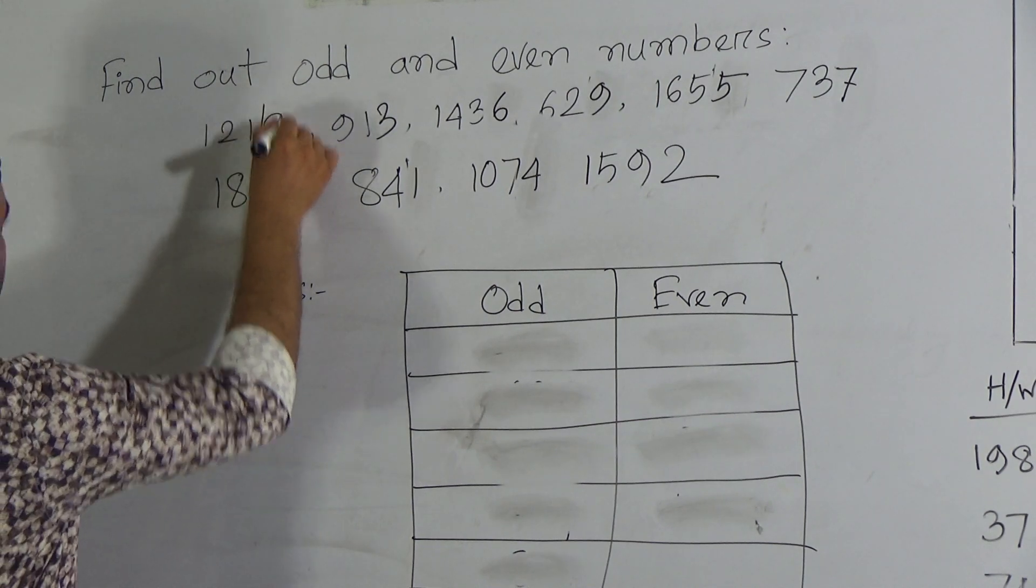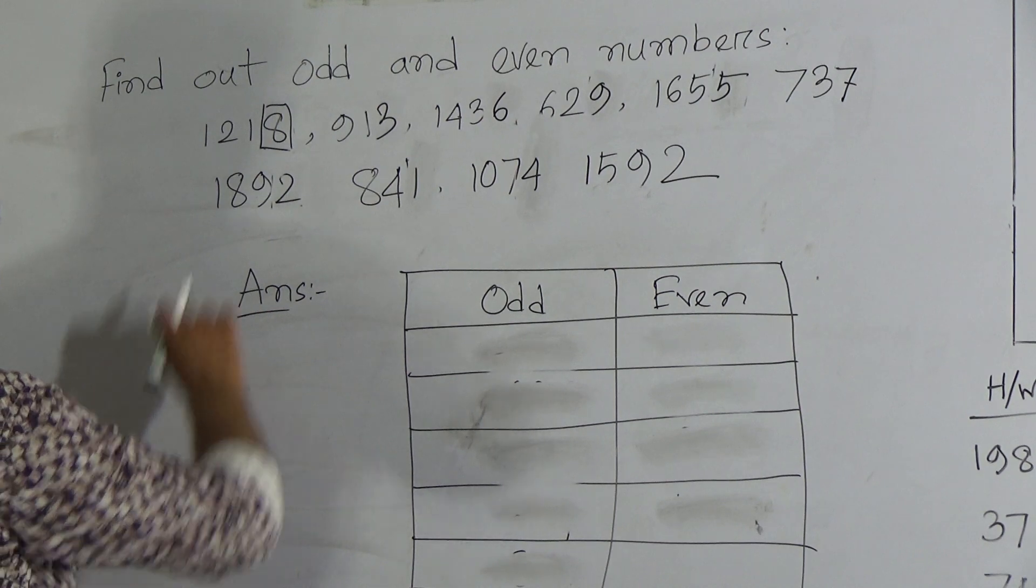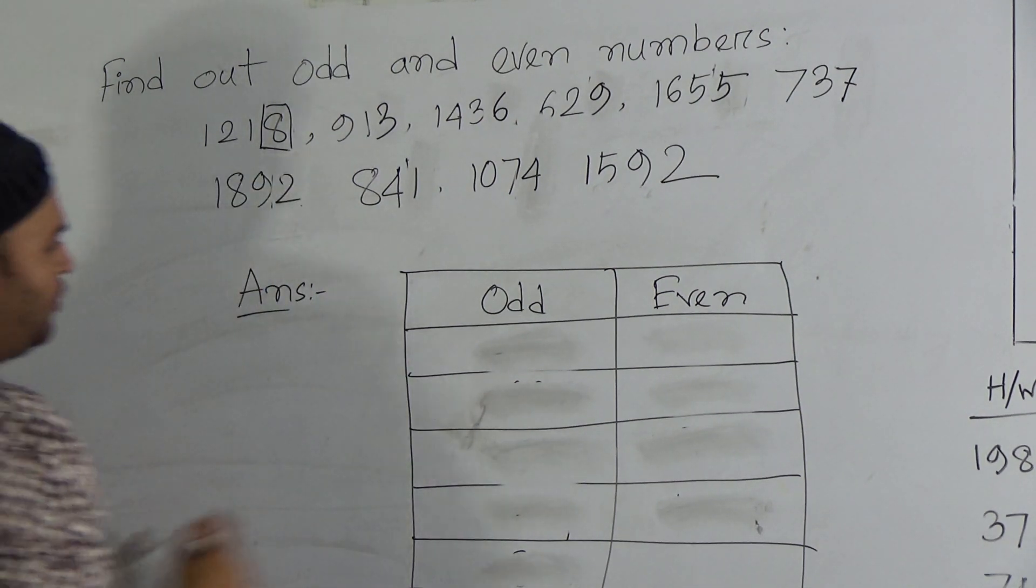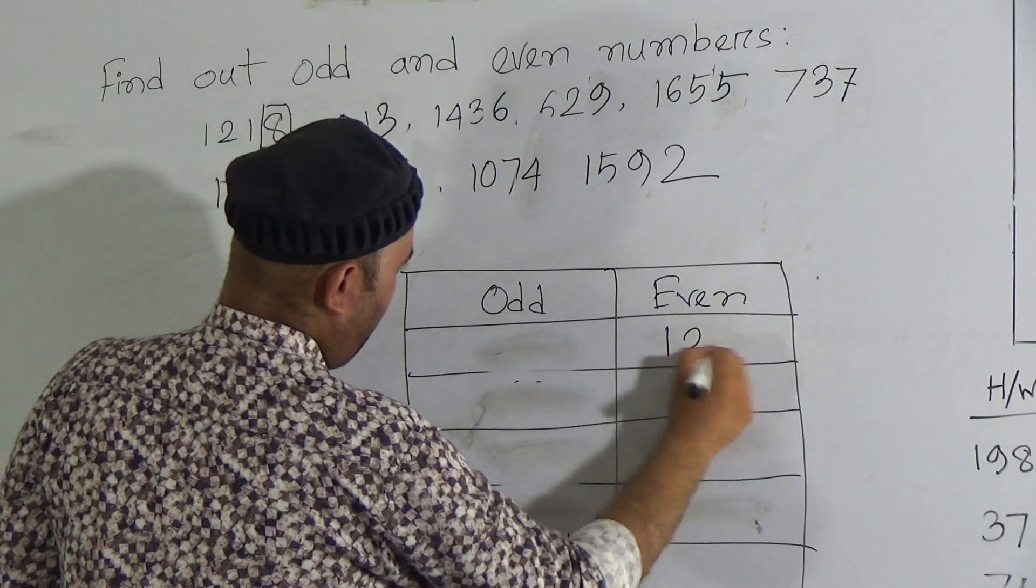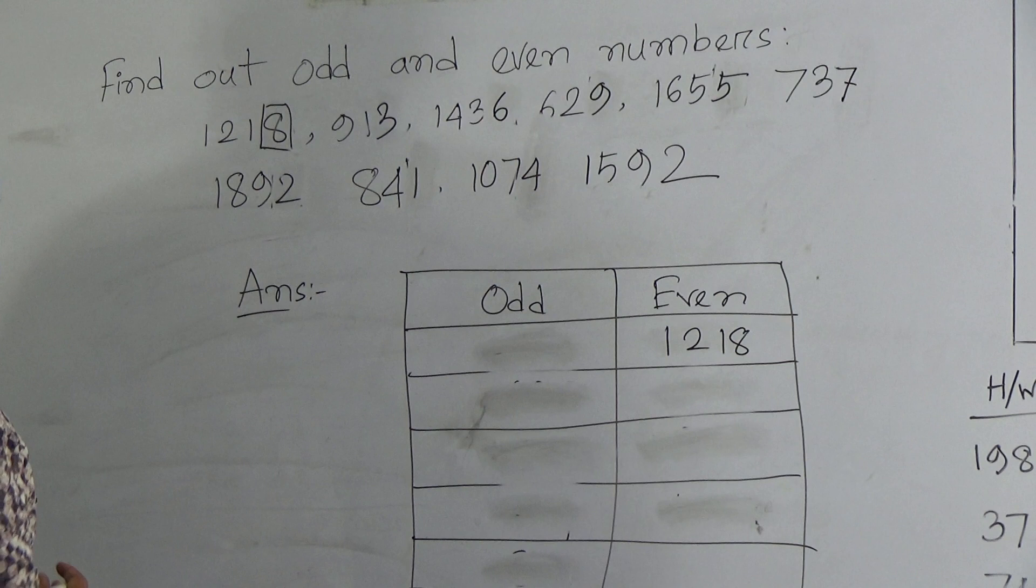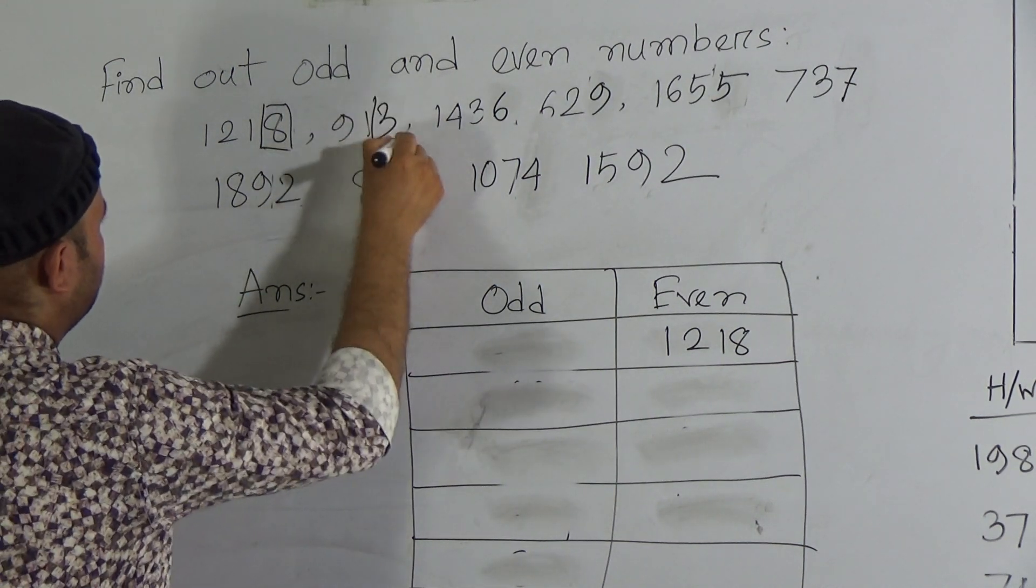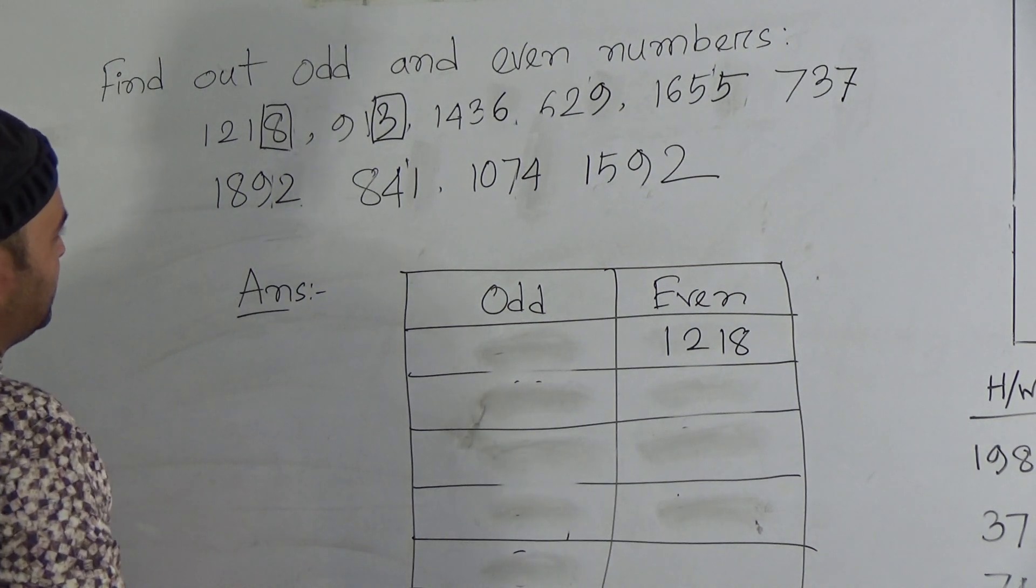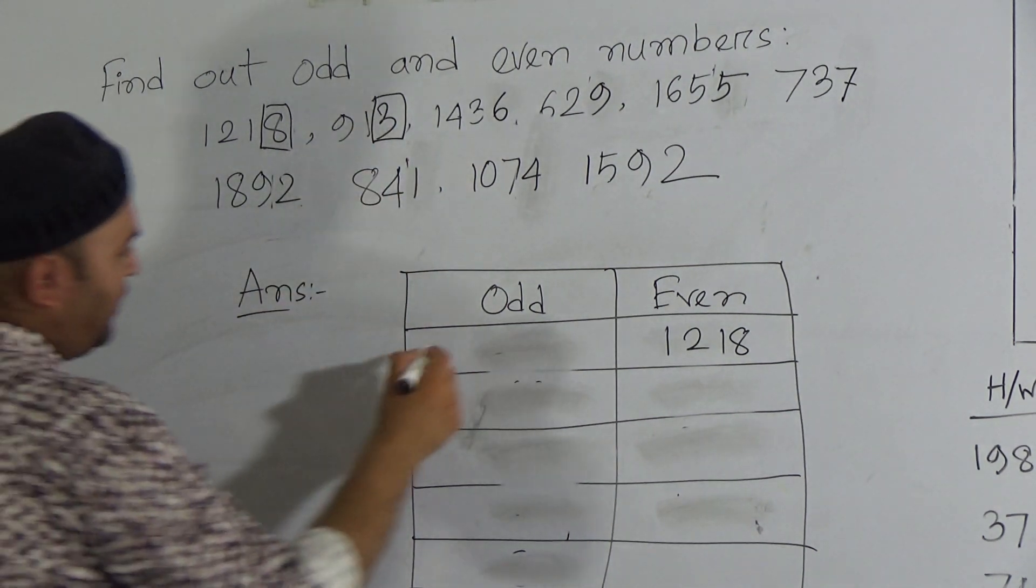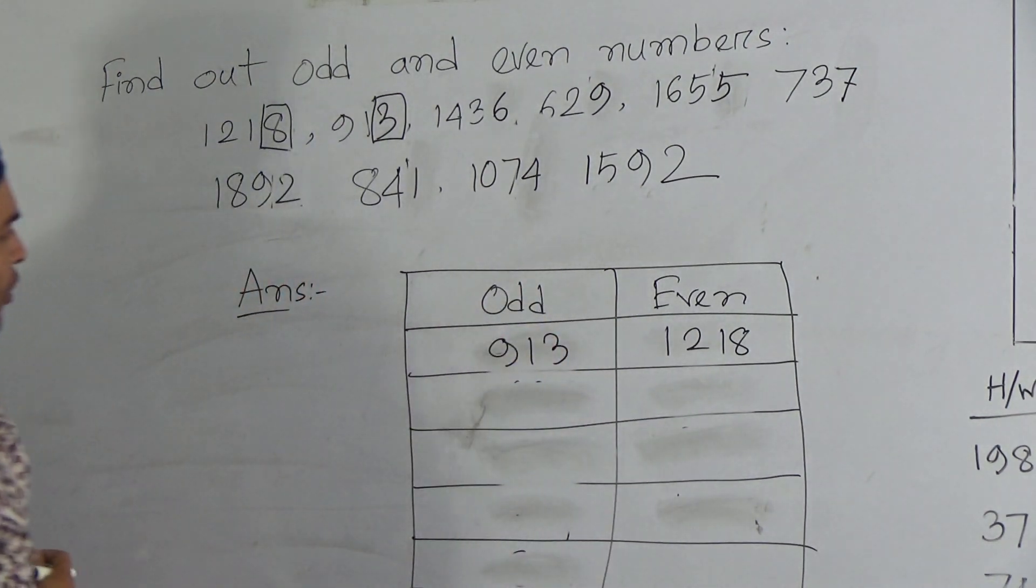In first number, 8 is in ones place. We know that 8 is an even number. So, 1218 will also be an even number. Now, next one, 913. 3 is here, ones place digit. And we know that 3 is an odd number. That's why 913 will be an odd number.